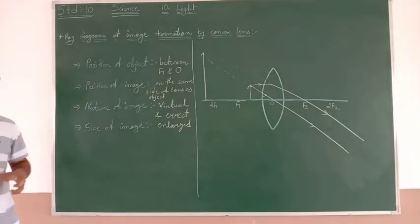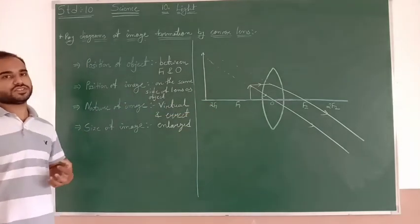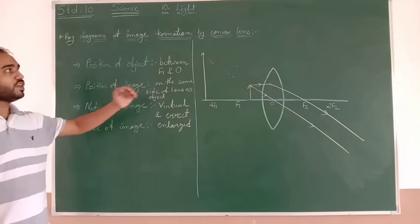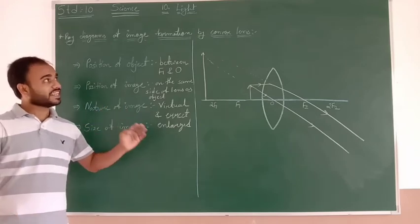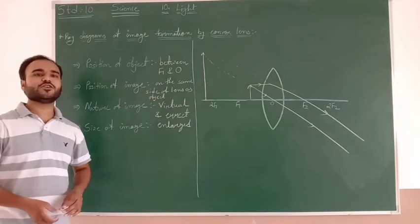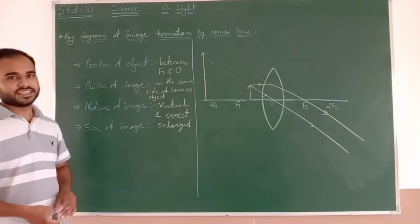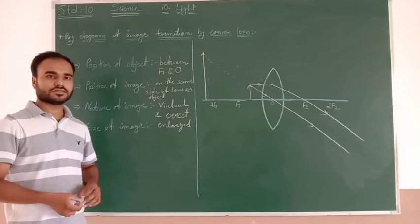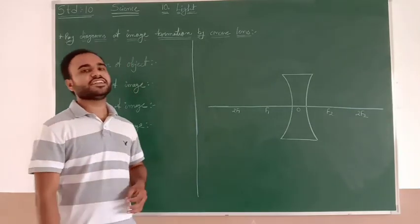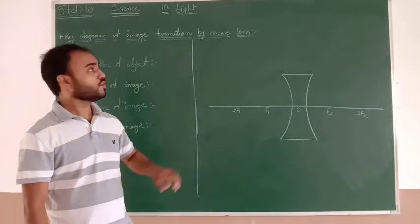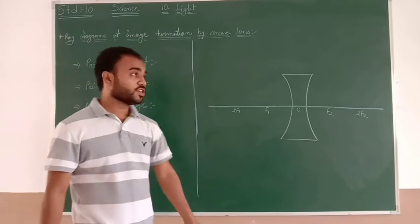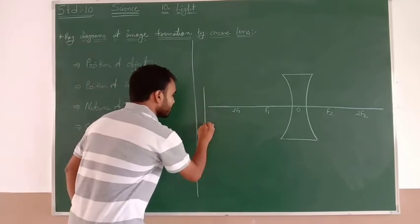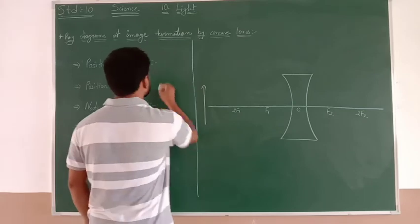These are the 6 ray diagrams for convex lens, which are the most important. Now we will move towards the ray diagrams for concave lens. In front of the concave lens, when the object is placed at infinity.